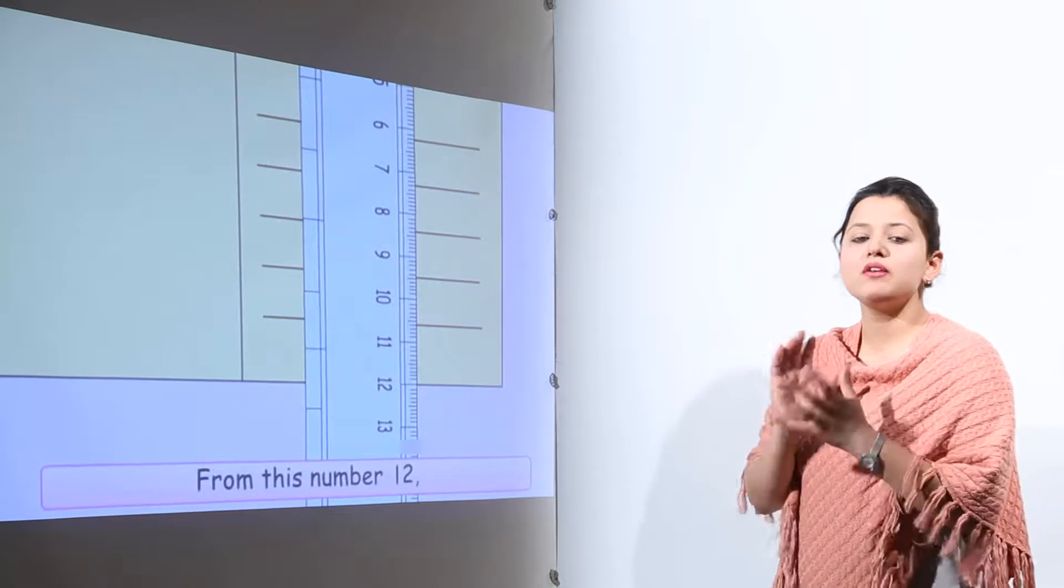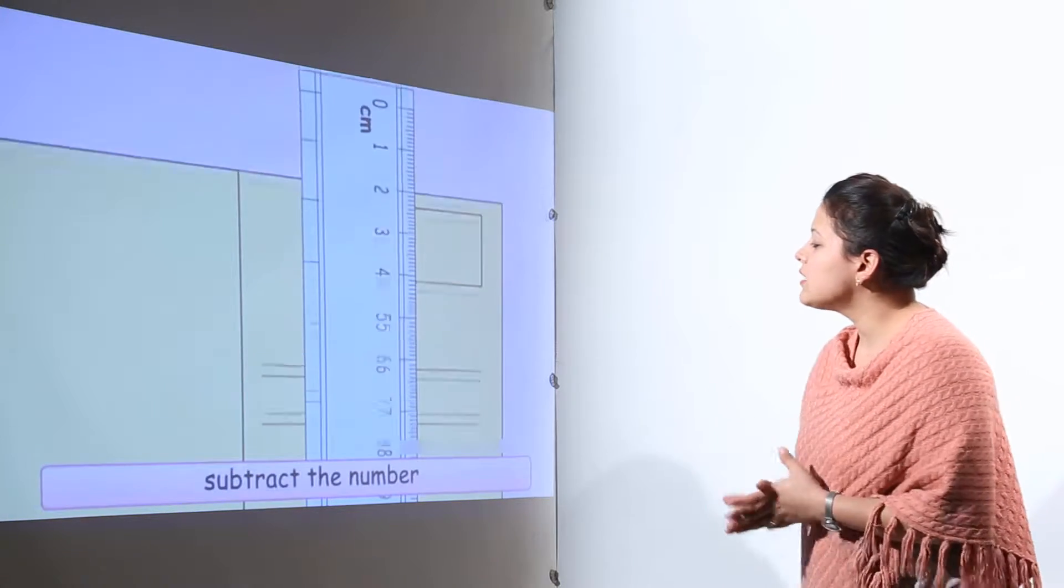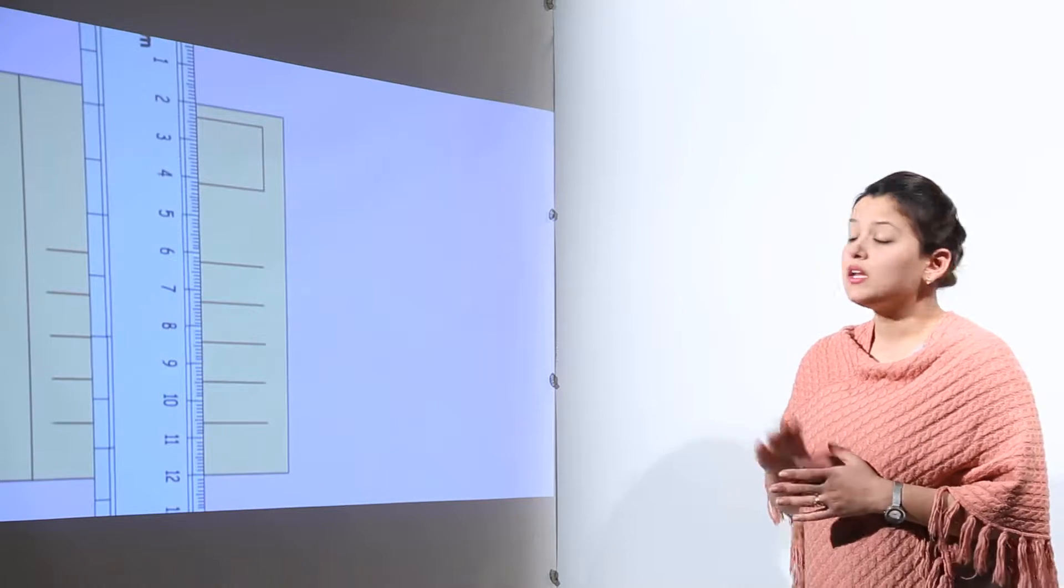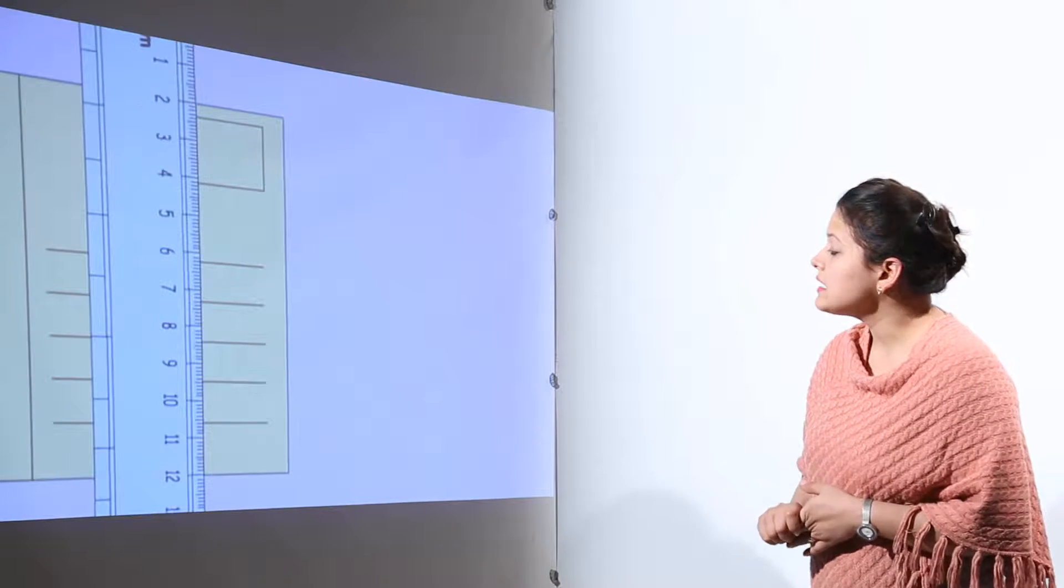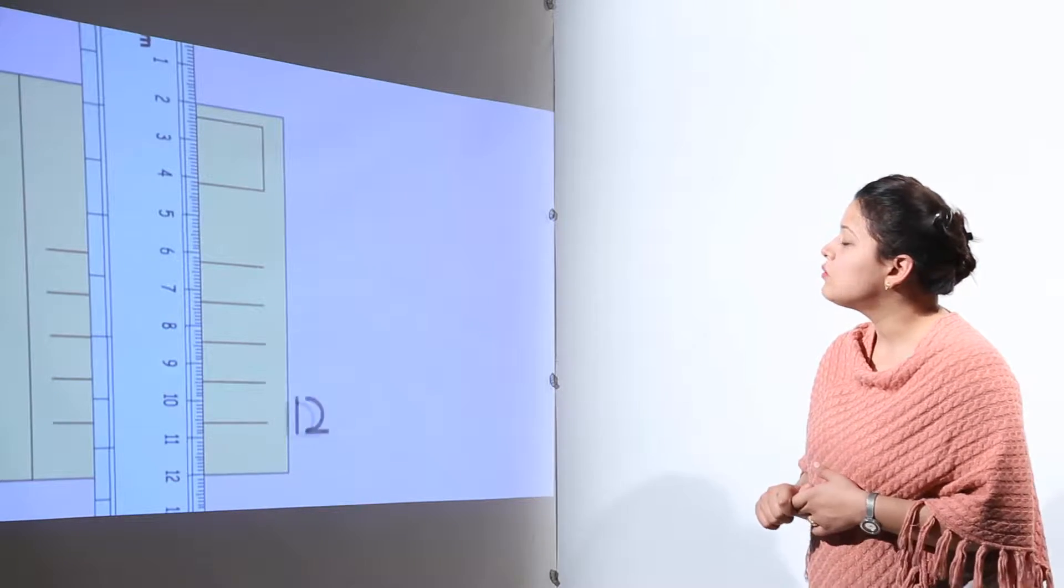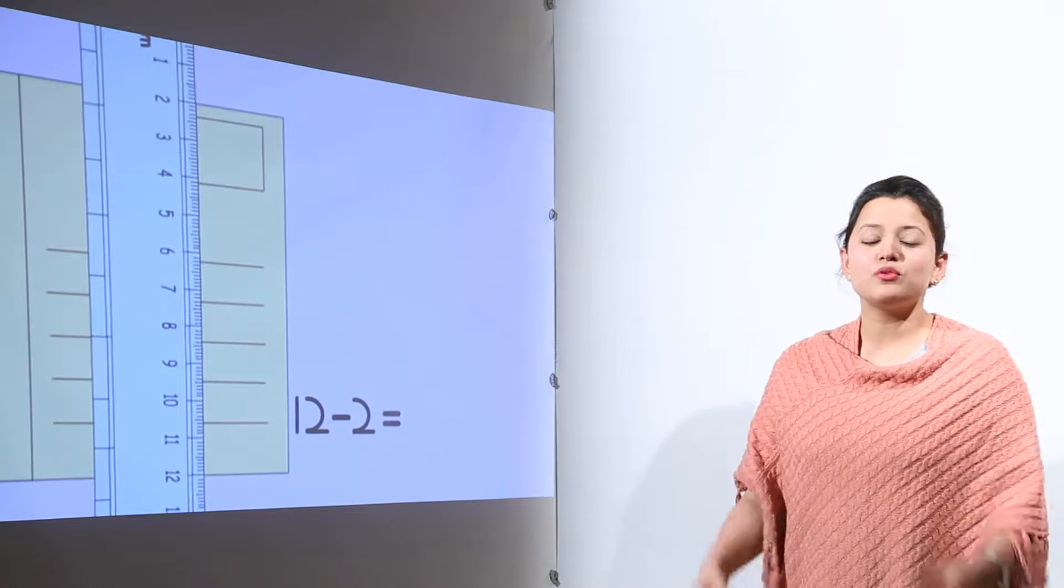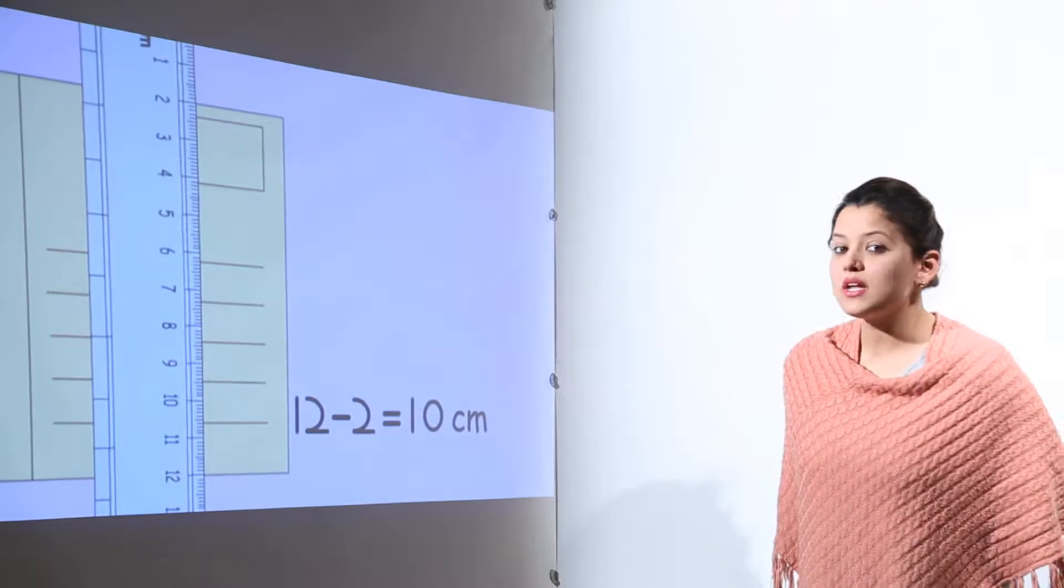We can definitely find out the length and that will give us direct measurement of the object. Now here we get that 12 minus 2 equals 10 centimeters. And we come to the conclusion that the width of this envelope that we were measuring is 10 centimeters.